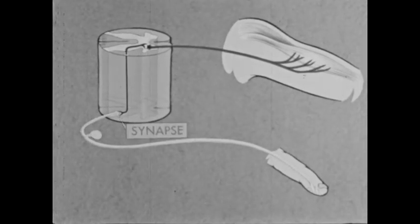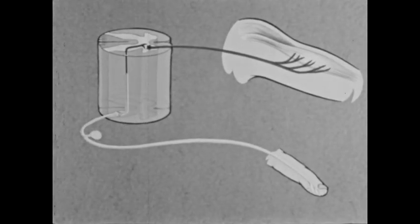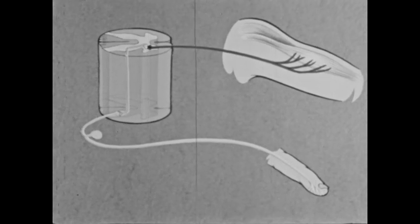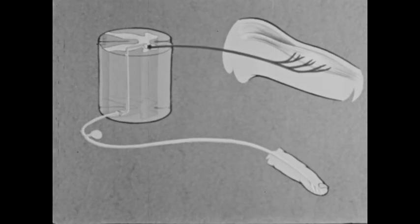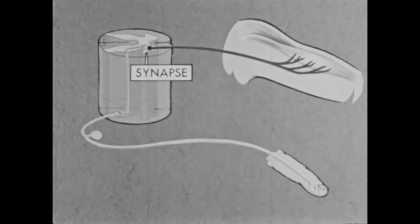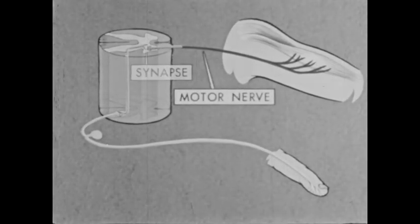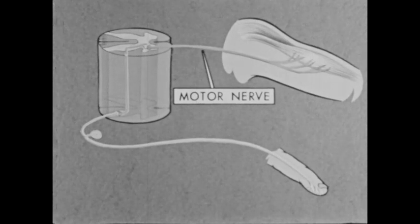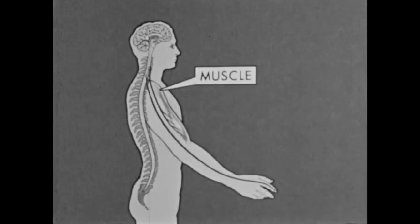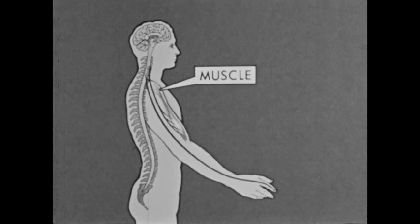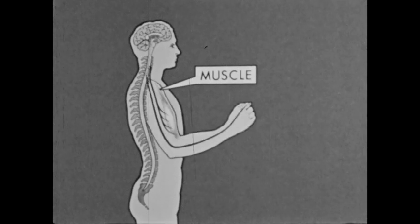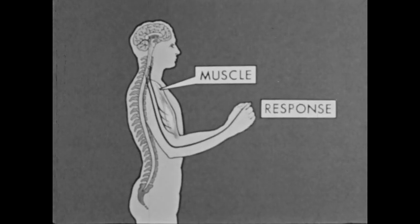The associative neuron determines the response. The response is transferred as a nerve impulse across another synapse to the motor nerve leading from the spinal cord. The nerve impulse causes the muscle to contract, and a response is made.